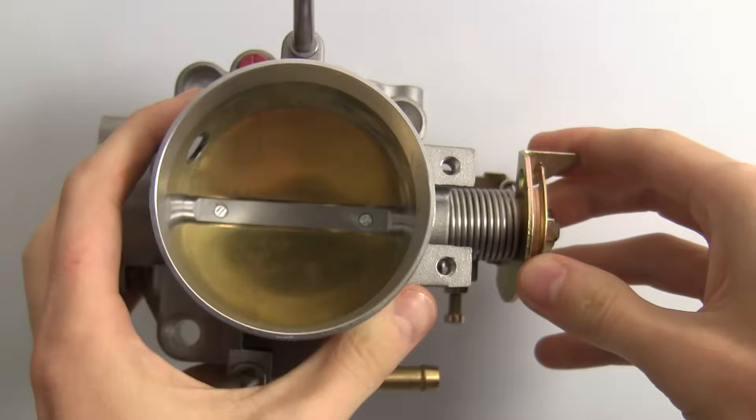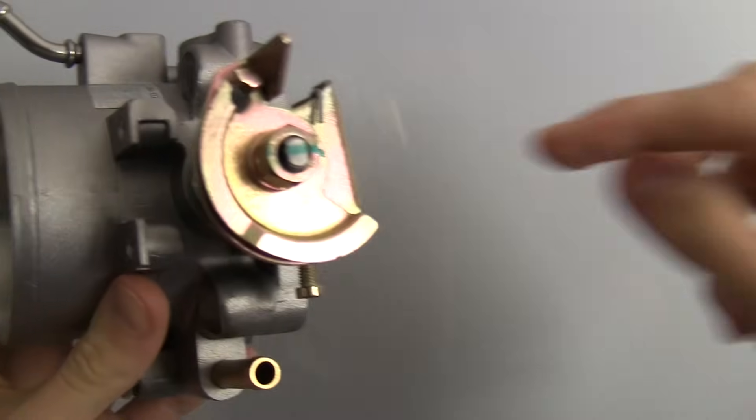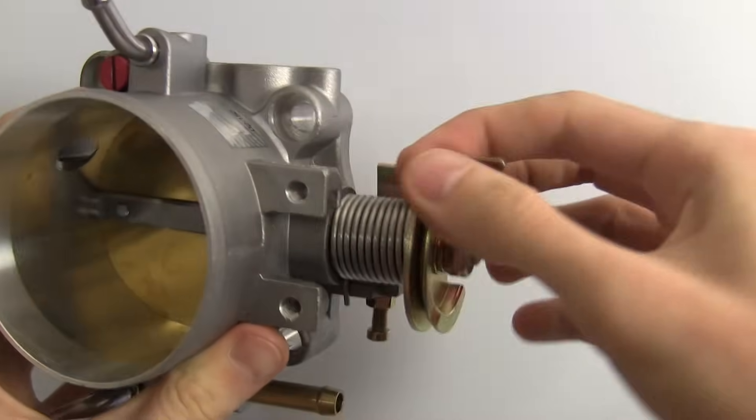So let's take a look at some of the features on this throttle body and what they're there for. The first thing we'll be looking at is the mechanism which actually opens the butterfly valve. What we've got here is where your throttle cable is going to route and be connected up top here.